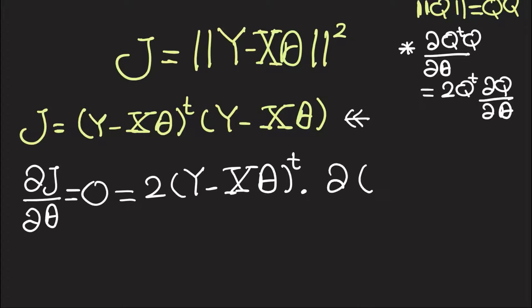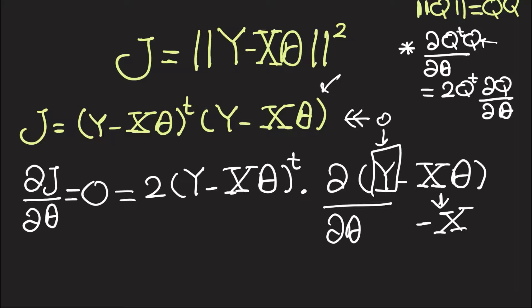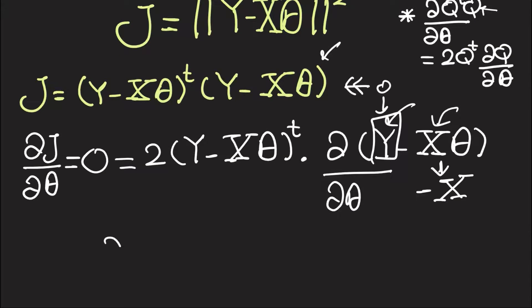So this is going to give us 0, and we went over this in the previous video. And this is going to give us negative X, because X here is not a function of theta, and Y here is also not a function of theta. Both of these are your dataset - just a column of constants and here a matrix of constants.